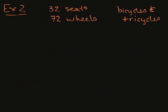Example two, we are at a bicycle store. And we have bicycles and tricycles. And if there are 32 seats and 72 wheels, how many bicycles and tricycles were there?